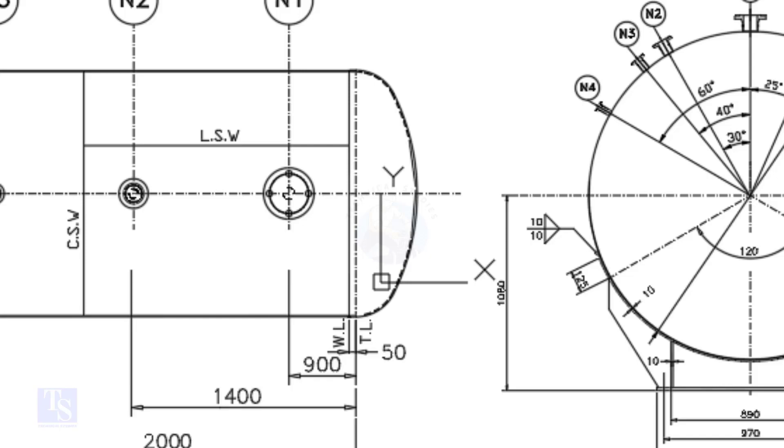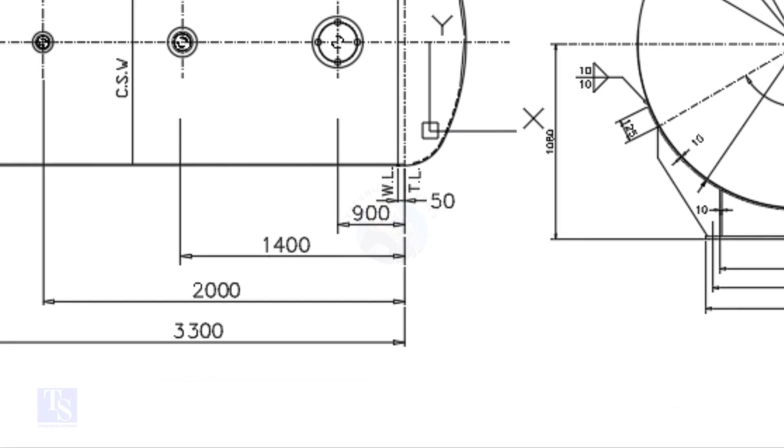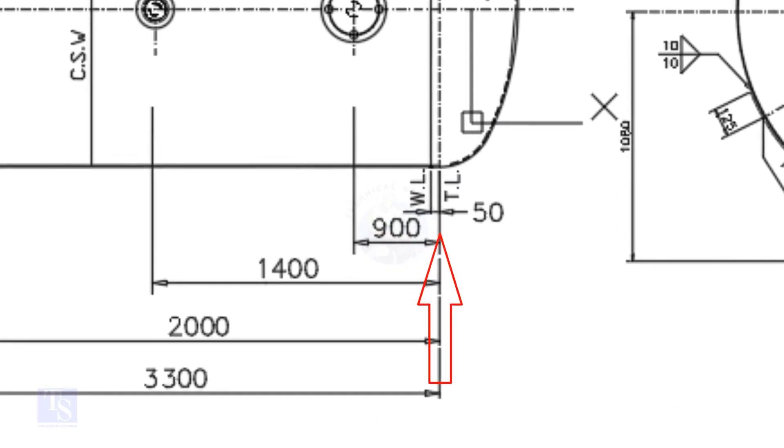Here, the straight face is 50 millimeters. In this drawing, the nozzle center distance is starting from the TL. In some drawings you may see the nozzle center is given from the WL. So before starting the marking, carefully see these things.